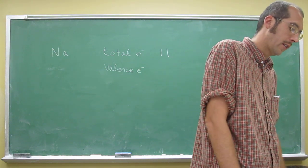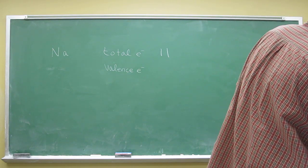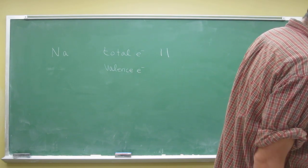But anyways, total number of valence electrons, you just look at the period that it's on, or the row, remember, they're synonyms.